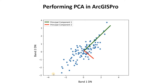Welcome. In this video we're going to briefly show you how to perform principal component analysis on rasters in ArcGIS Pro. Our goal is to take a seven-band multiband raster and deconvolve it using PCA prior to classification.